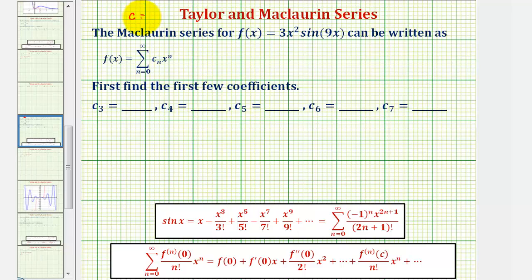We normally say c equals 0. To find the Maclaurin series, we could apply the formula where we have the summation from n equals 0 to infinity of the nth derivative of f evaluated at 0, divided by n factorial times x to the nth. But finding the higher order derivatives of our given function would be fairly complicated, because we'd have to apply the product and chain rule each time.